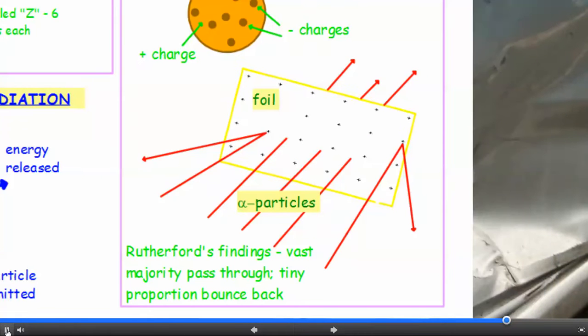And this represents Rutherford's findings, which was that the vast majority of alpha particles passed straight through a sheet of metal foil and a tiny proportion bounced straight back at them.